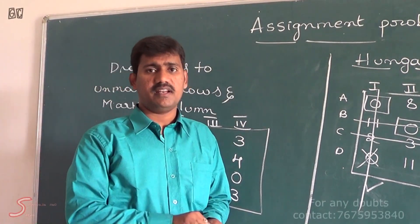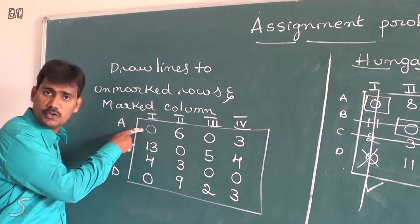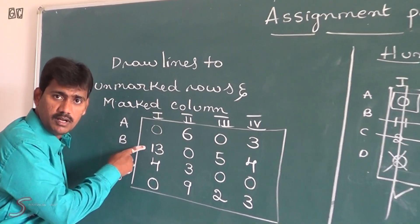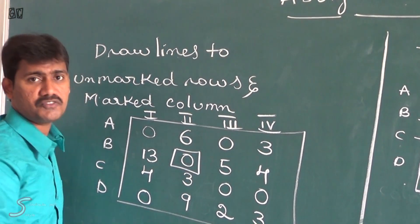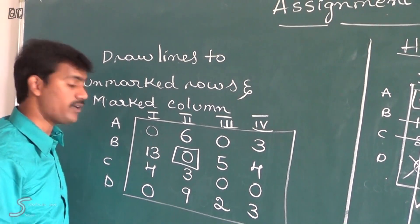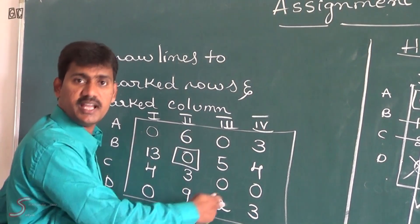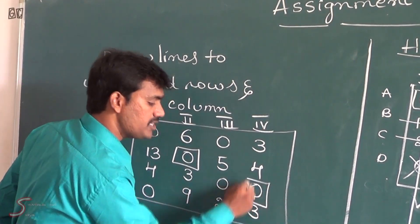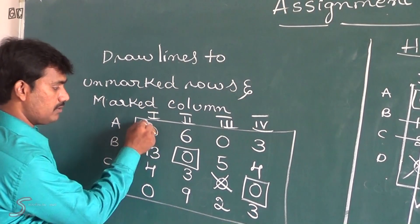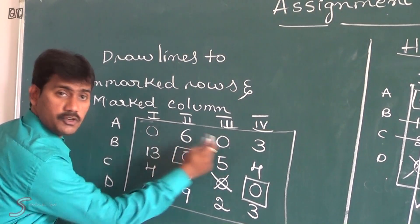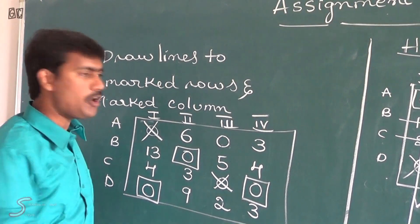We repeat the assignment procedure on the new matrix, again looking for single-zero rows and single-zero columns. We find: a single zero in one row, assign it; a single zero in another row, assign it; a single zero in another column, cut it. Continuing, we find single-zero assignments throughout the matrix until all four employees are assigned.